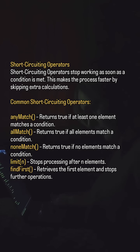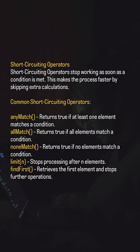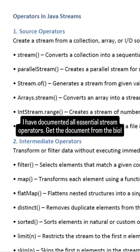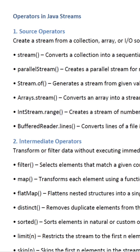Short-circuiting operators stop working as soon as a condition is met. This makes the process faster by skipping extra calculations. All essential stream operators have been documented — get the document from the bio.